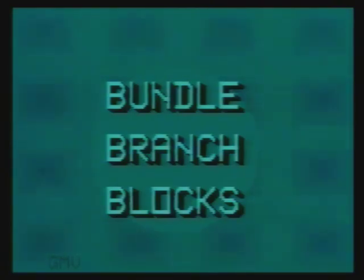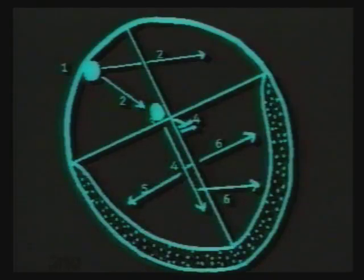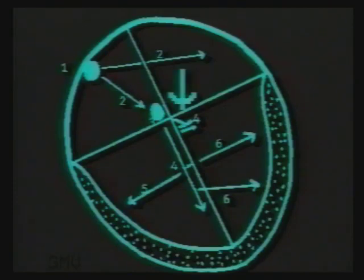Bundle branch blocks. A bundle branch block is suspected when the width of the QRS complex is more than 3 small squares, that is more than 0.12 seconds. This is because when one bundle branch is blocked, only one ventricle will be activated first and then the impulse will pass to the other ventricle across the septum, resulting in delayed depolarization in an abnormal direction.